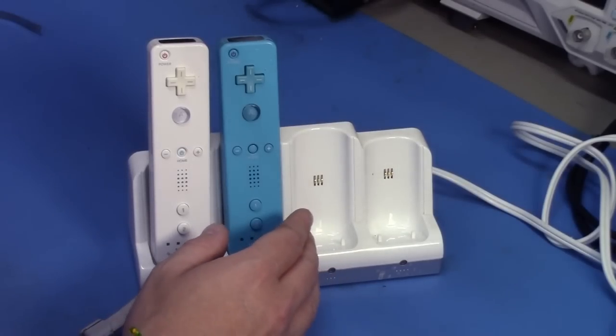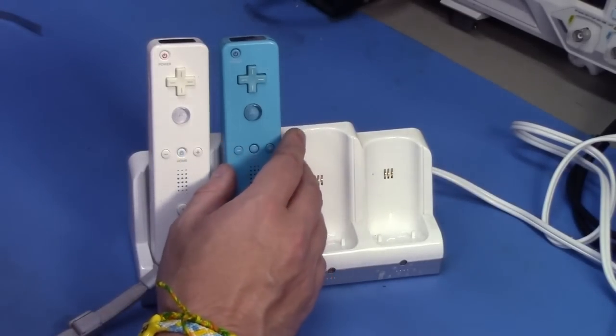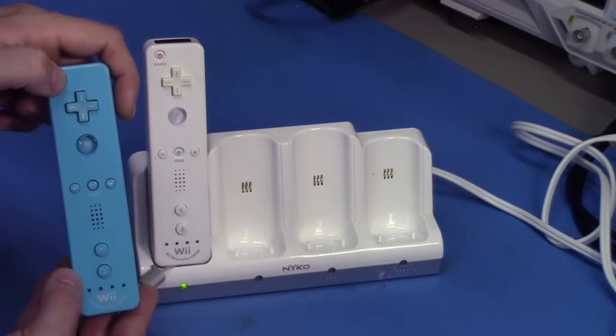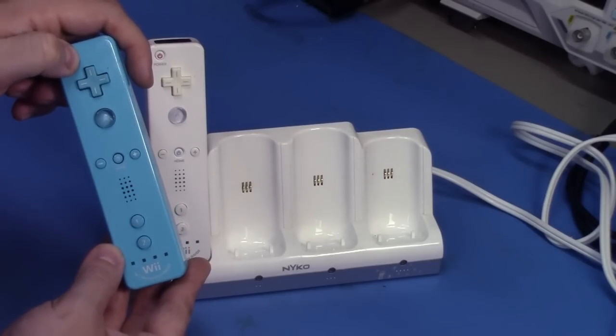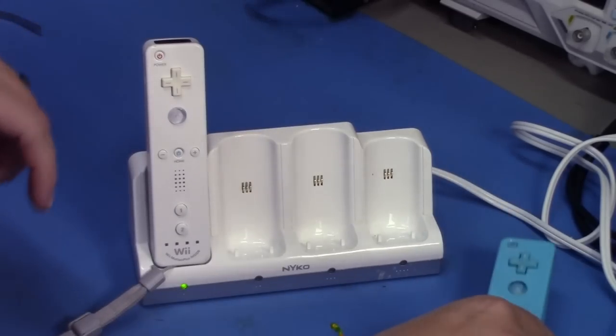Now we have two Wii remotes in our Nyko charging station. Both of them are showing a green light, which means they're both fully charged. We have the stock battery packs in here. Let's just test them. I'm going to pull out the blue remote, and I'm going to try to power this, and we're getting nothing. Nothing here. So we're going to put this one to the side.